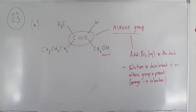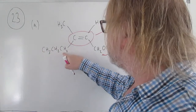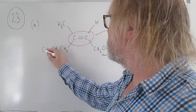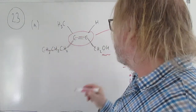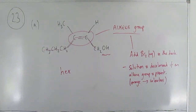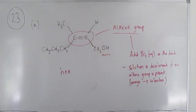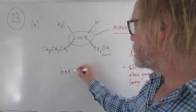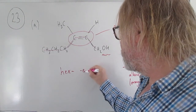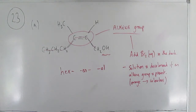Part 2 wants the name of compound E. We follow the usual method: find the longest continuous chain, which is one, two, three, four, five, six carbons — so that's 'hex'. We're going to have two suffixes because we've got '-en' for the alkene and '-ol' for the alcohol, giving hex-something-en-something-ol, and we'll have to account for the branch as well.